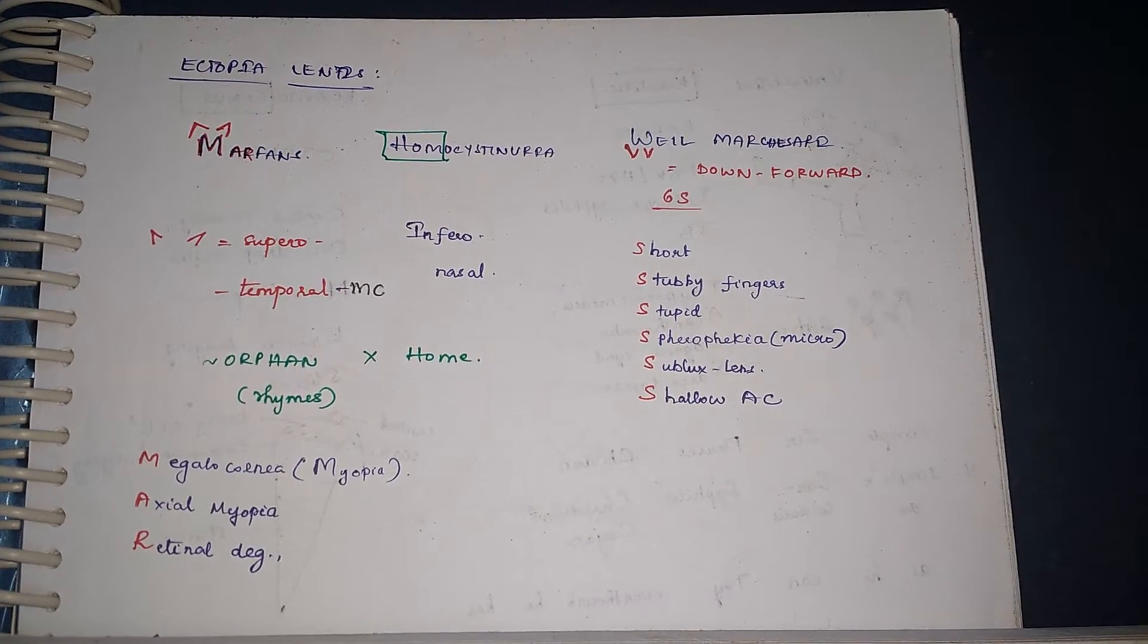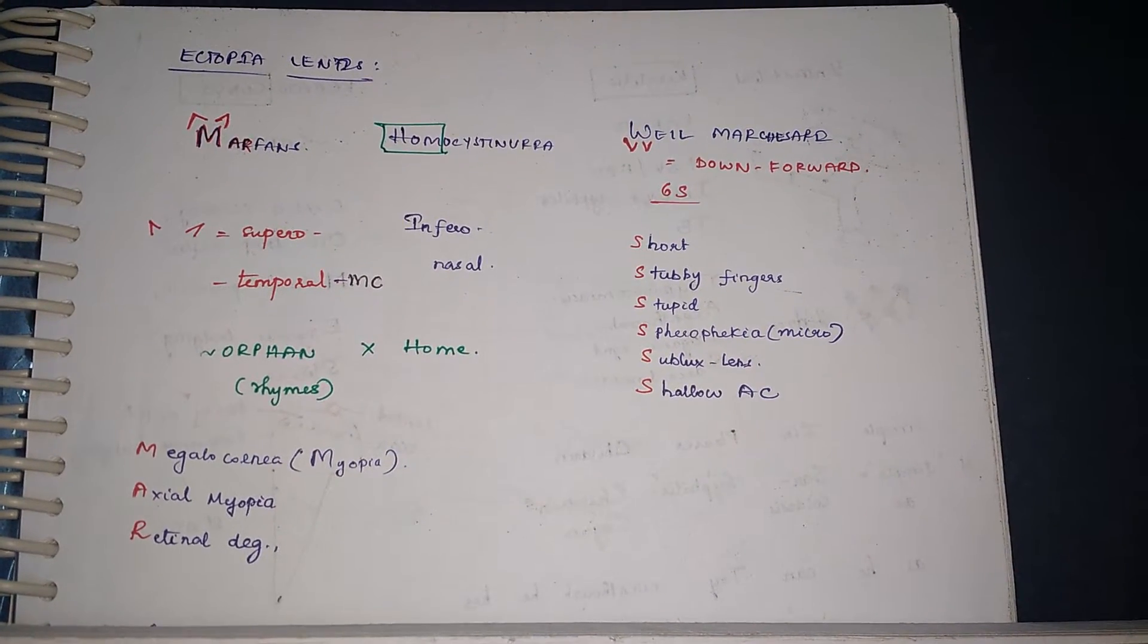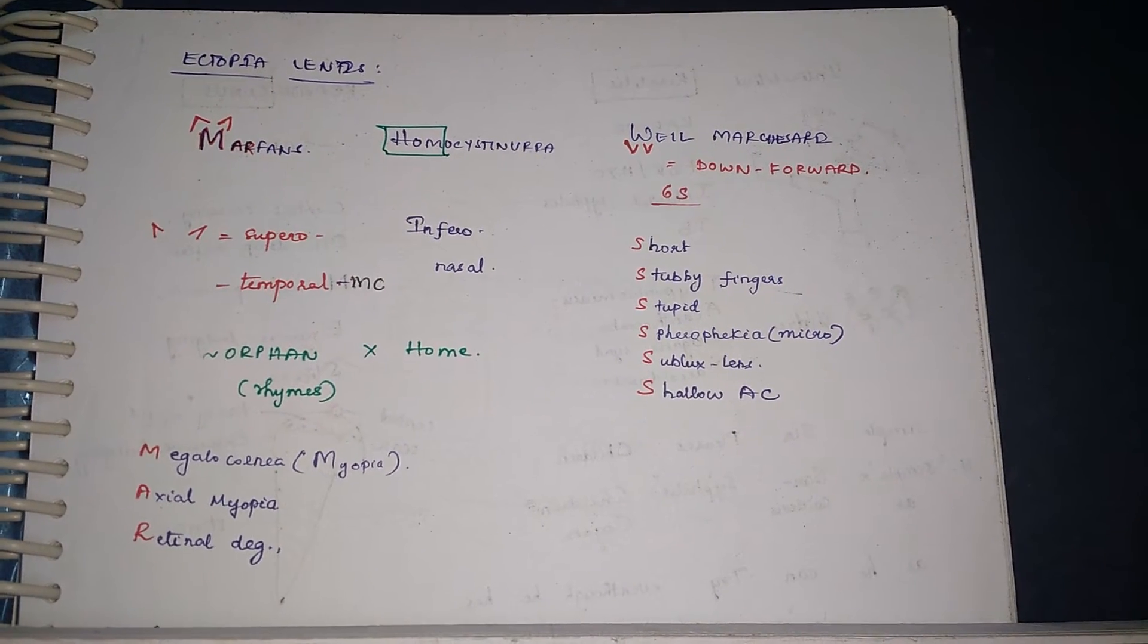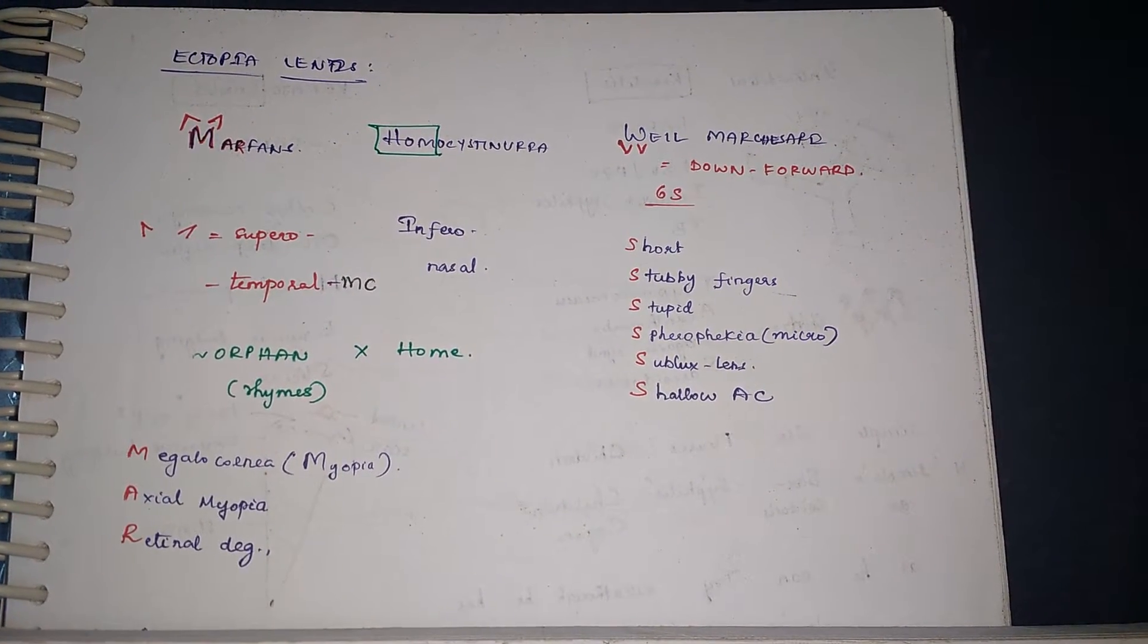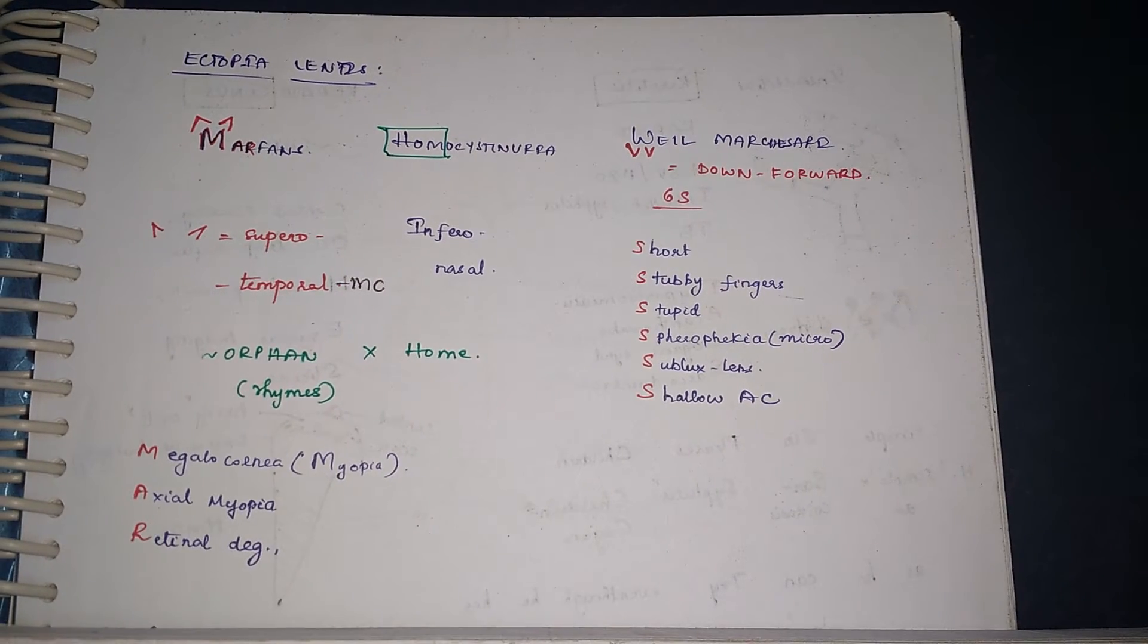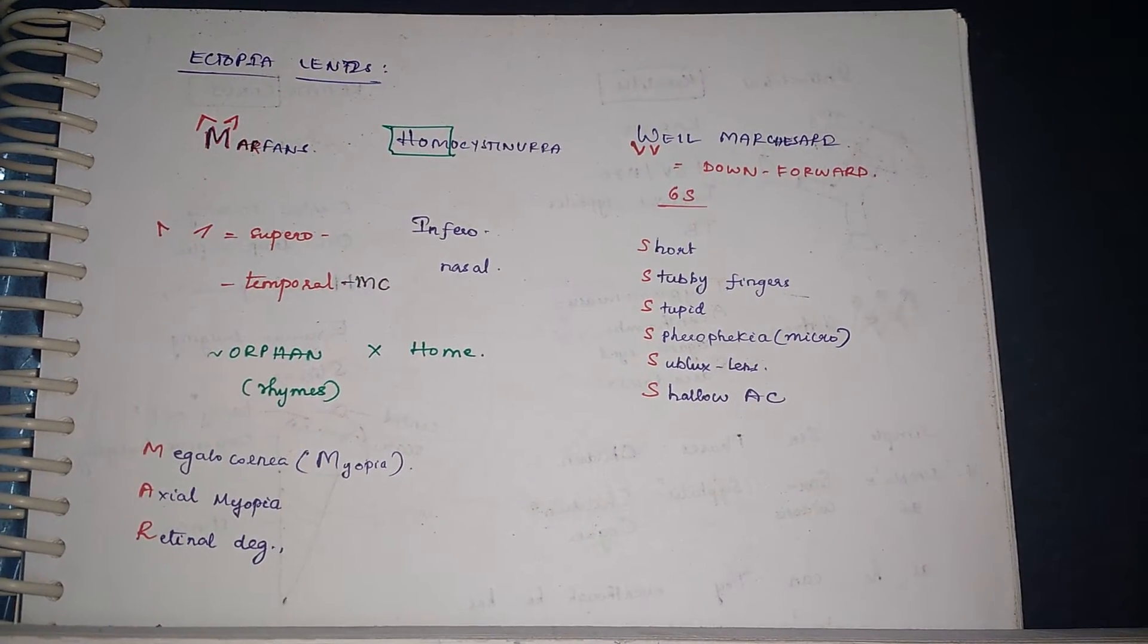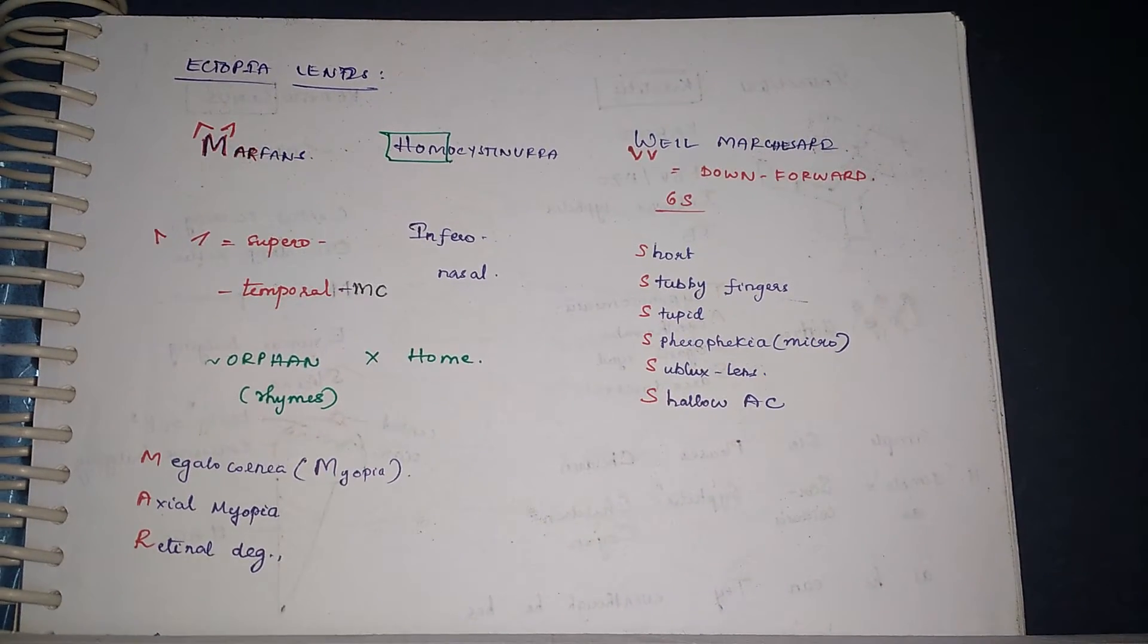Low - like short or tall, it is short. Stubby fingers. Stupid or intelligent - stupid. We have Microsphaerophakia, Subluxation of lens, and Shallow anterior chamber as well.